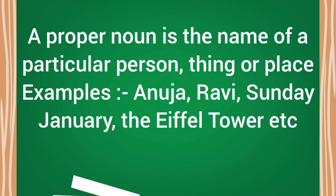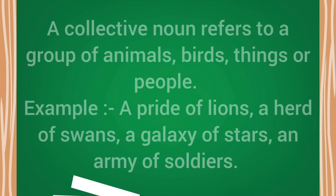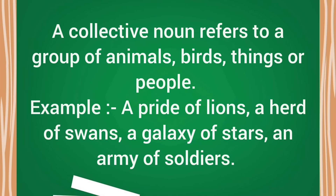So a proper noun is the name of a particular person, thing or place. Now let's learn about the collective noun. A collective noun refers to a group of animals, birds, things or people — like a pride of lions, a herd of swans, a galaxy of stars, an army of soldiers etc.